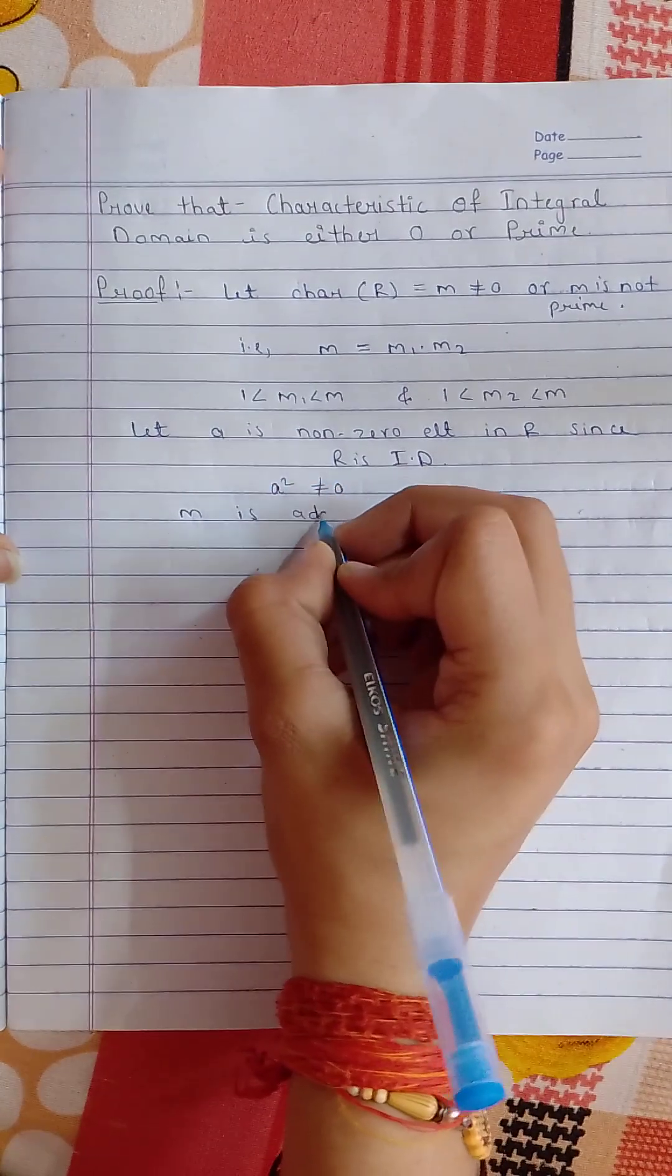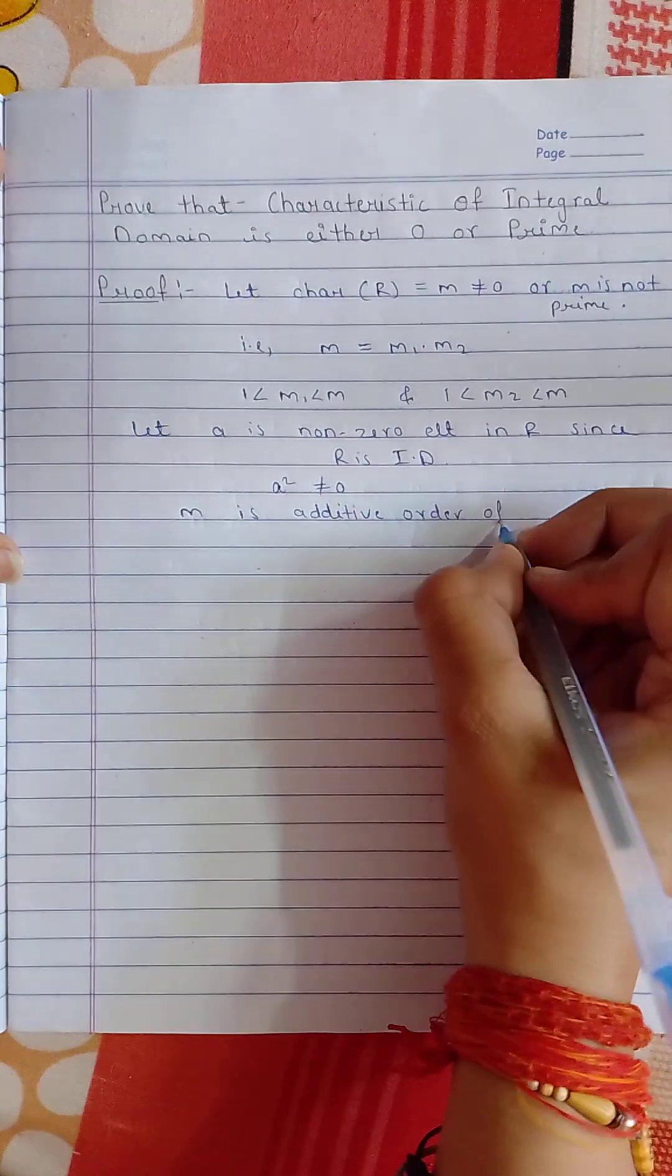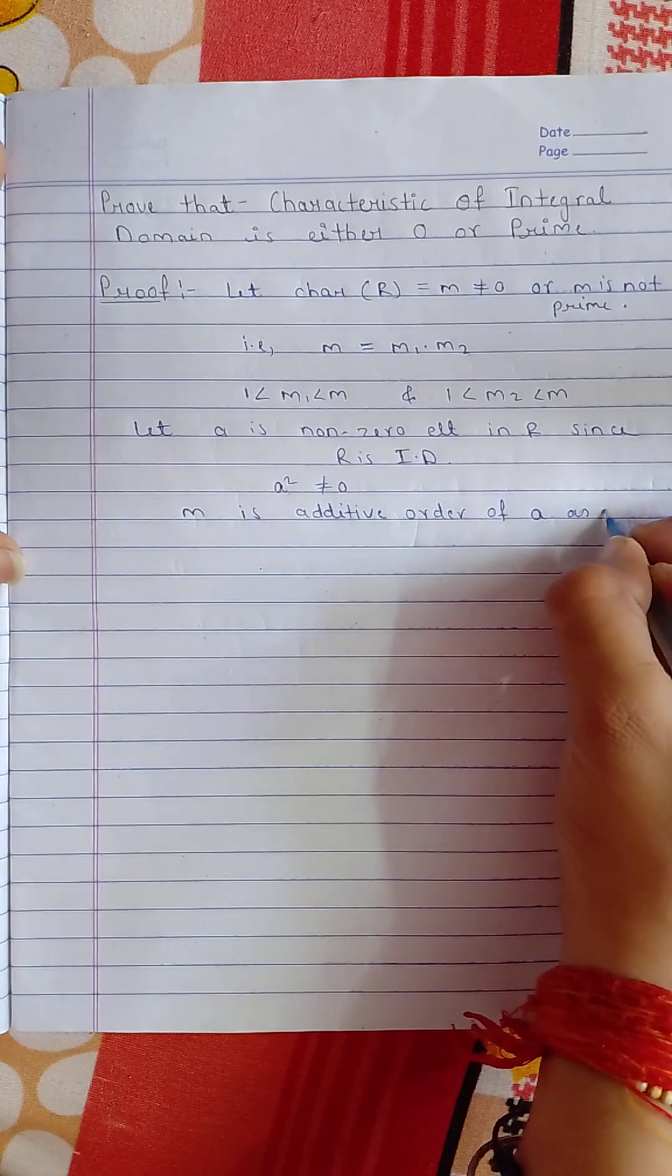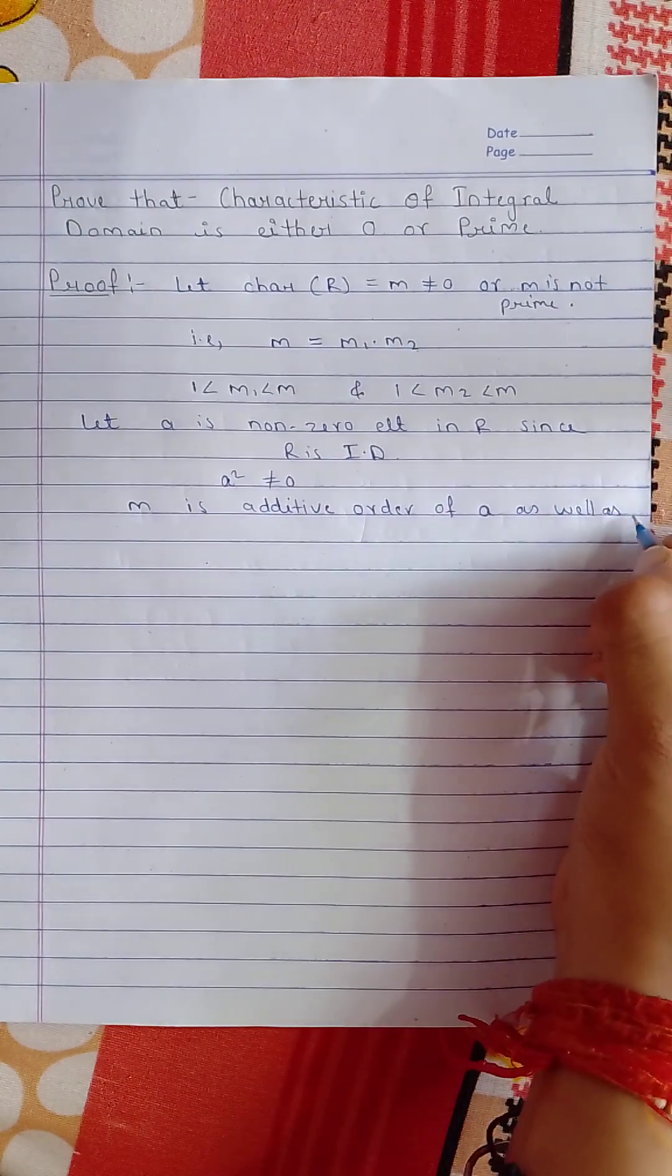m is the additive order of a, as well as a squared.